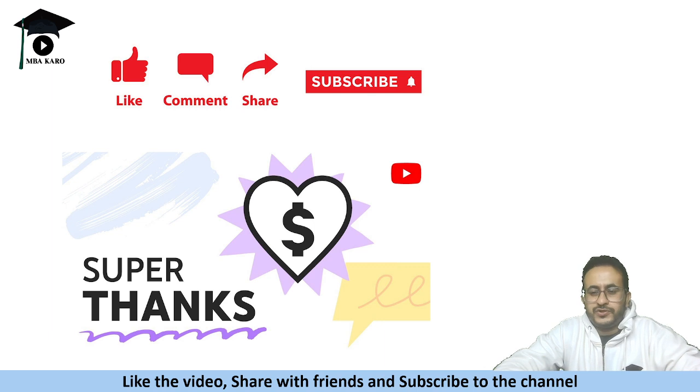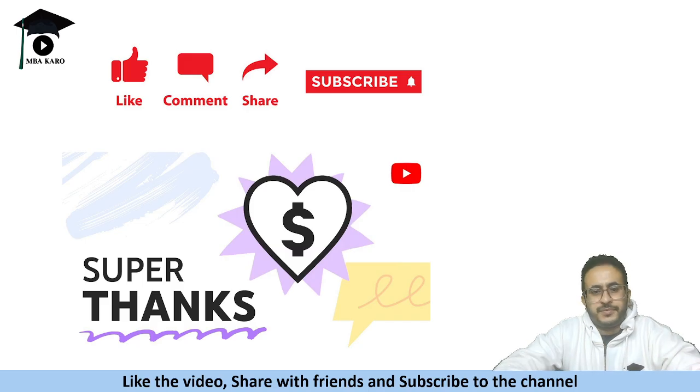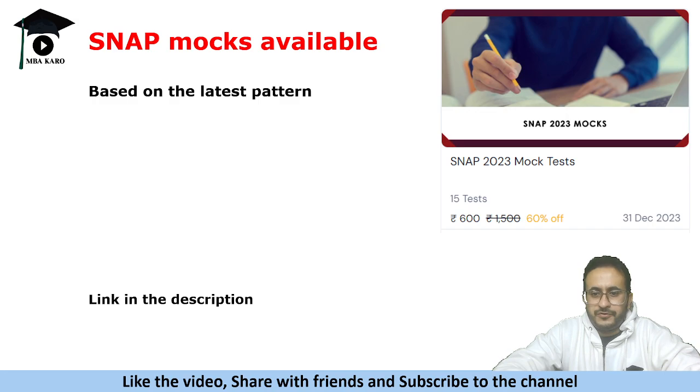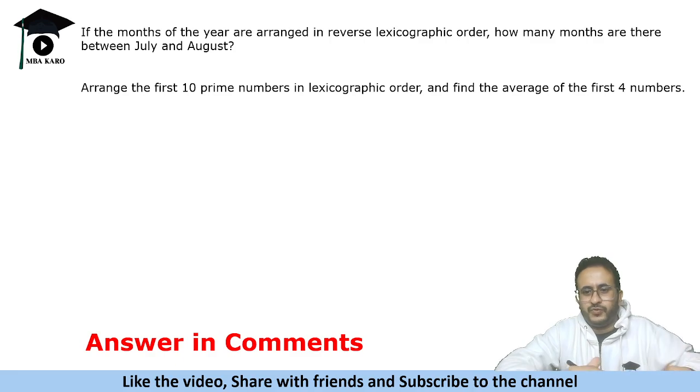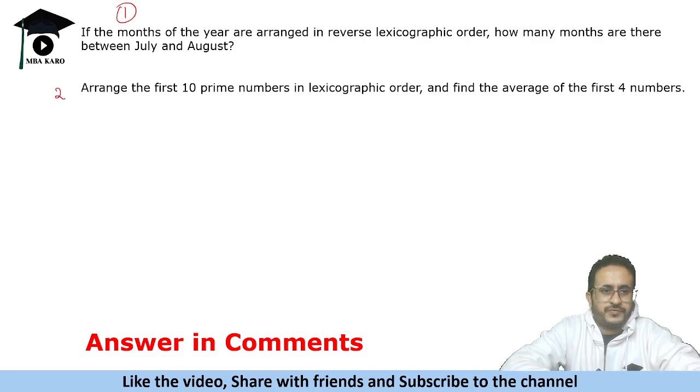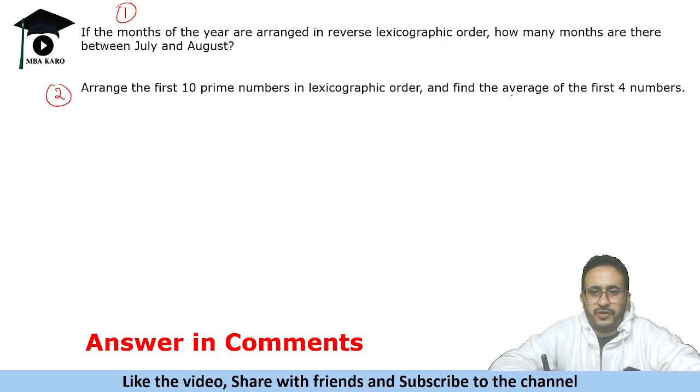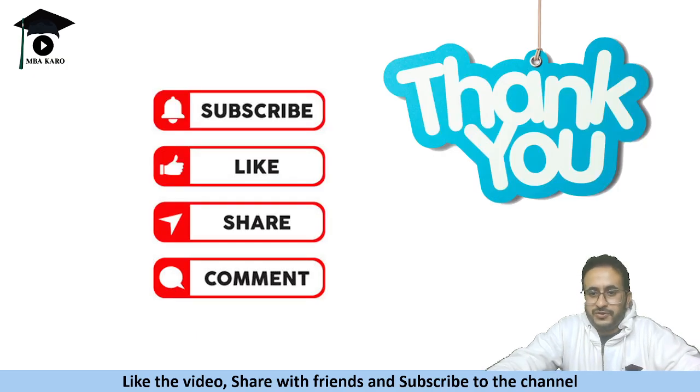So these were this was the concept of lexicographic order and a few questions based on them alphabet based number based and a combination of them. So I hope you found this session useful and you learned a new concept from it. So don't forget to like this video and in case you are preparing for SNAP and are looking for mock tests for SNAP 2 and 3 you can purchase our mocks. The link is given in the description of this video. And not only this there are two questions although I have not created the options you answer in the comments of this video. If the months of the year are arranged in reverse lexicographic order how many months are there between July and August. And the second question is arrange the first 10 prime numbers in lexicographic order and find the average of the first 4 numbers. So solve these two questions and answer in the comments of this video. Thanks for watching this video and I hope you must have found this video useful so don't forget to like the video and share it with your friends.